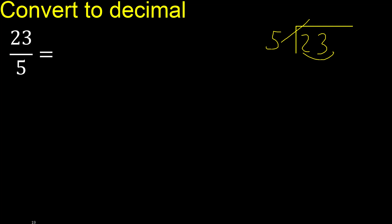5 multiplied by 5 is 25 — 25 is greater. 5 multiplied by 4 is 20, ok. 20 is not greater. 23 minus 20 is 3, next.